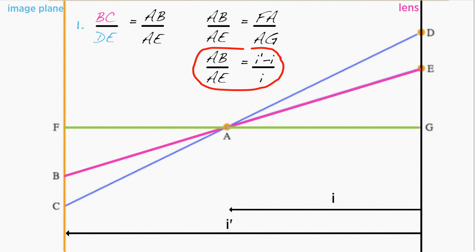And now let's substitute this back into equation 1, which gives us BC divided by DE equals I prime minus I divided by I.